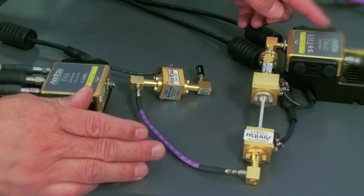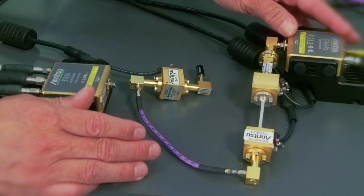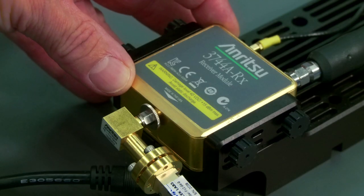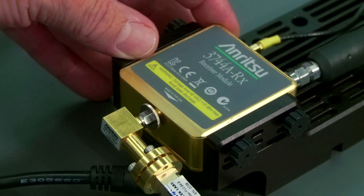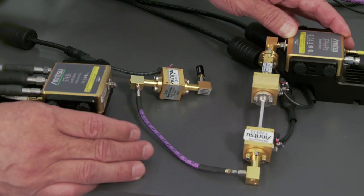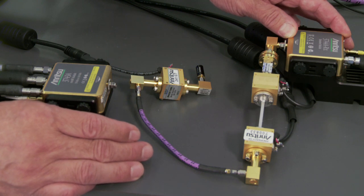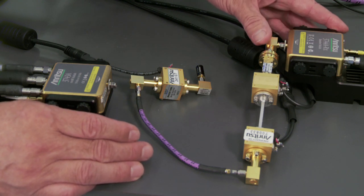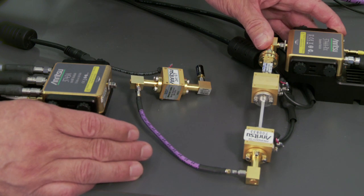And so what we're also using is the specially configured millimeter-wave module. This is the 3744A RX, which has been optimized for noise figure measurements by removing the coupler and injecting the signal directly into the sampler. And that will give us an improvement in noise figure performance up to about 12 dB.